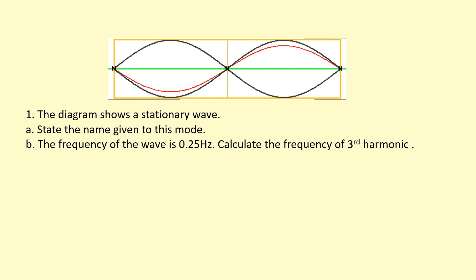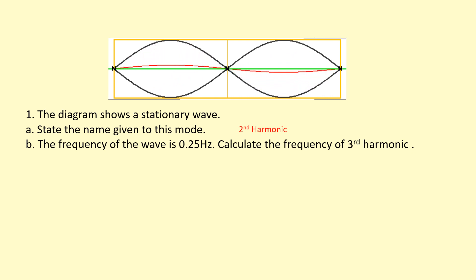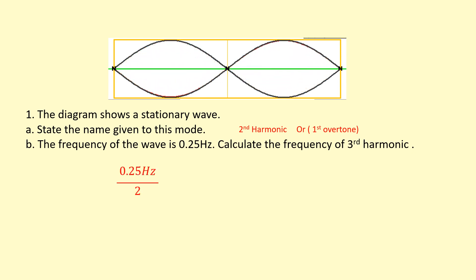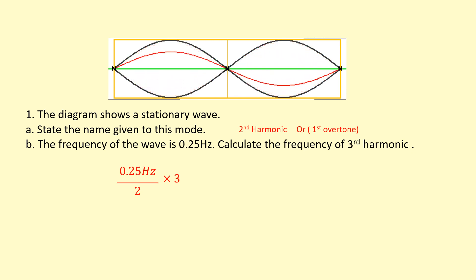The diagram shows a stationary wave. State the name given to this mode. We know it's not the fundamental or the first harmonic because it's got two loops. So this is going to be the second harmonic, sometimes known as the first overtone. The frequency of the wave is 0.25 hertz — calculate the frequency of the third harmonic. Since this is the second harmonic, I divide 0.25 by two to get the fundamental frequency, then multiply by three because the third harmonic has three times the frequency of the first harmonic. That gives us 0.38 hertz.